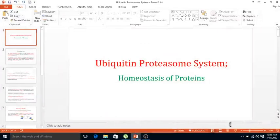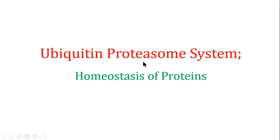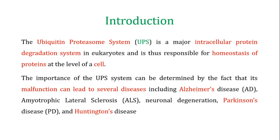Welcome back. In this video we are going to talk about the ubiquitin proteasome system. This ubiquitin proteasome system is a very important component of the cell cycle and it ensures that cell division and the cell cycle are carried out in a regulated fashion. It is a major intracellular protein degradation system in eukaryotes and is thus responsible for protein homeostasis at the level of the cell.